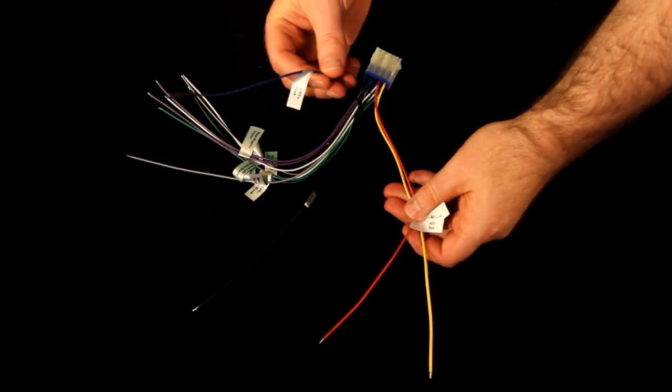Some stereos also have another power wire that is used to control external components like an amplifier. Connecting this wire to the appropriate wire on an amplifier will turn the amplifier on and off as you turn the stereo on and off.